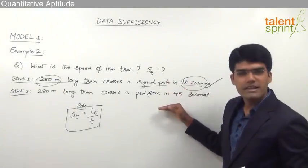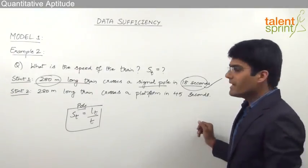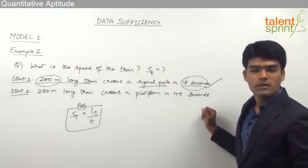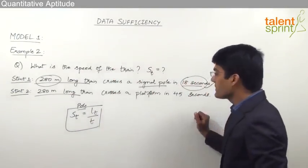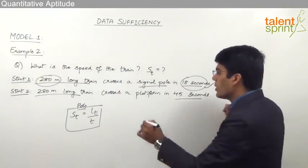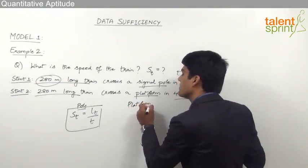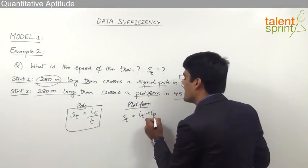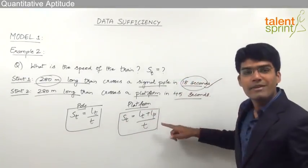Now let us check Statement 2. It says a 280-meter long train crosses a platform in 45 seconds. When a train crosses a platform, the equation to be used is: speed of the train = (length of the train + length of the platform) ÷ time, as we have discussed in time and distance.